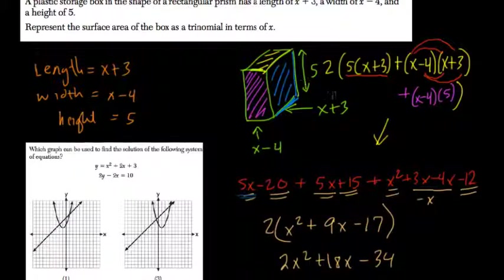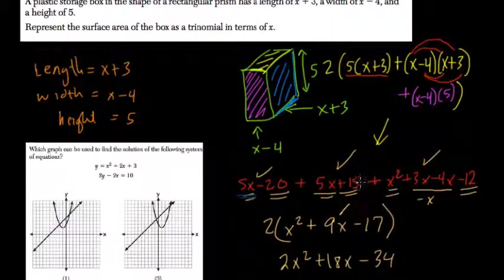And of course, you can go through it and check this in different ways. But for me, I would just go back and repeat the process. 5x plus 15, check. x squared plus 3x minus 4x minus 12, got it. 5x minus 20. We add them up: 5x, 5x, that's 10x minus x is 9x. Negative 20, 15, that's negative 5. Minus 12 is negative 17. And x squared all by itself. And I doubled it all. So this looks right to me.